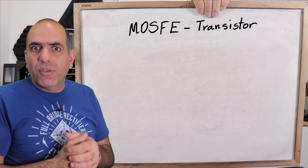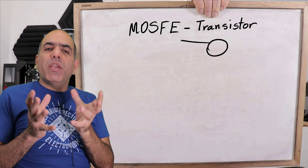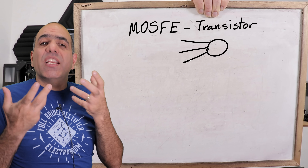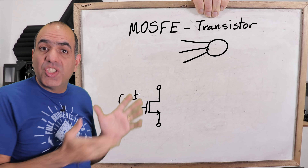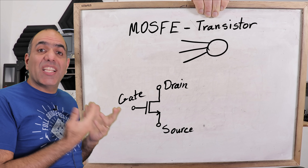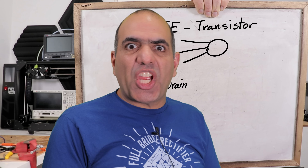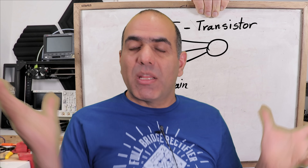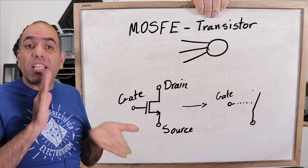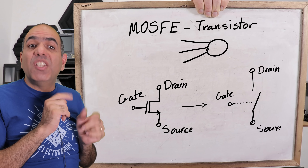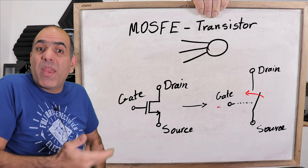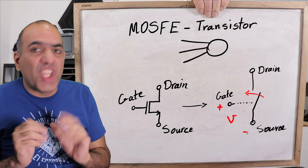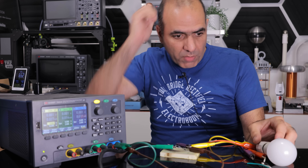Let's learn about MOSFET transistors. It is typically a three-legged component. The legs are called gate, drain, and source — and it acts like a switch between drain and source terminals that can close and open by a voltage on the gate.